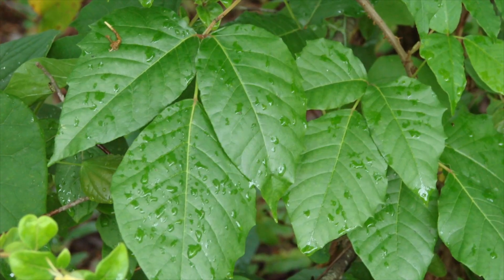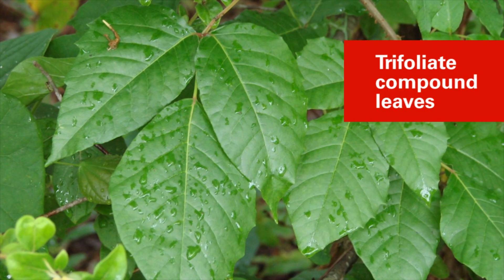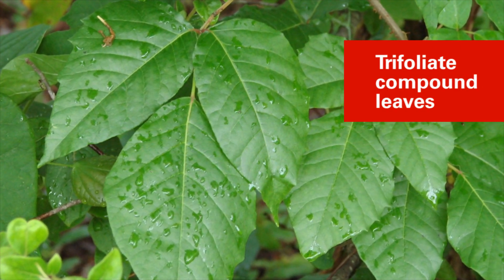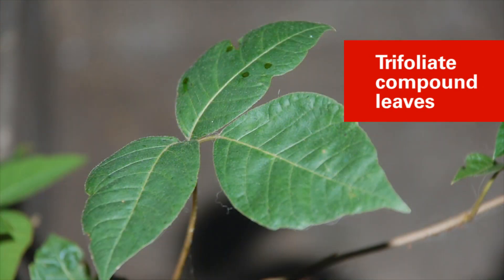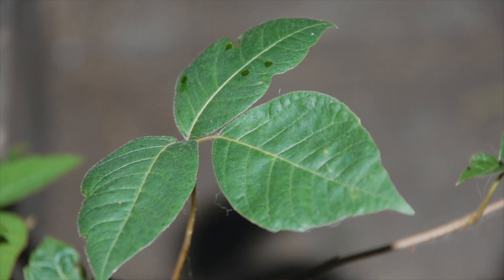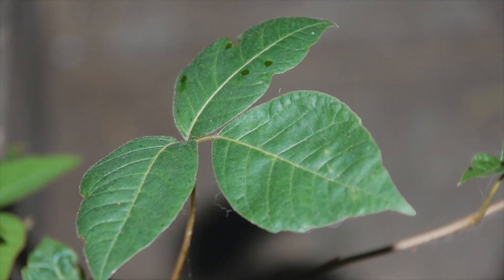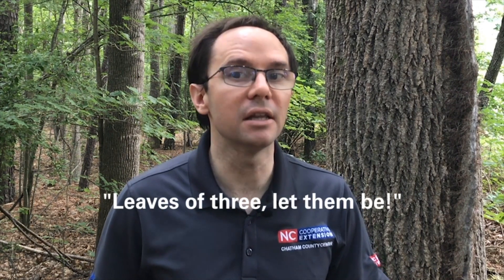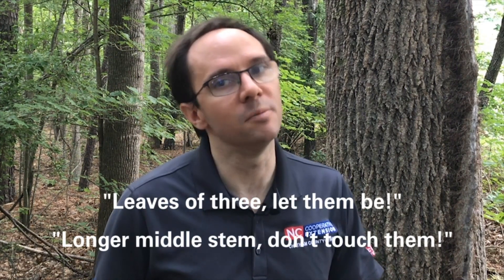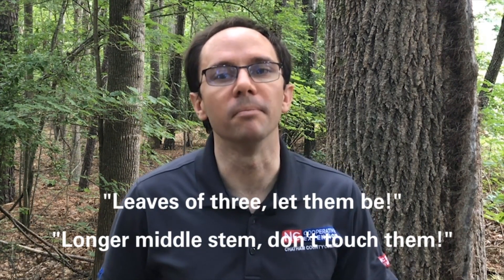Poison ivy has two characters that make it easy to recognize. First, these trifoliate compound leaves. This means that each leaf is actually comprised of three leaflets. Note that the central leaflet is slightly longer than the outer two leaflets. So the adages 'leaves of three let them be' and 'longer middle stem don't touch them' are good rules of thumb.